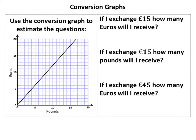We're looking at conversion graphs in this video. A conversion graph does what it says on the tin — it converts between one unit and another. In this case, it's Euros and Pounds. It could be miles to kilometres, pints to litres, anything really, as long as it's two units. That's what a conversion graph is.